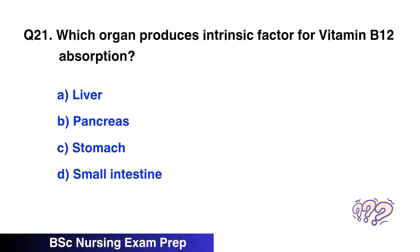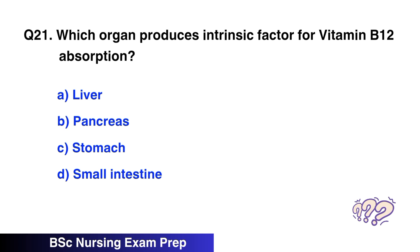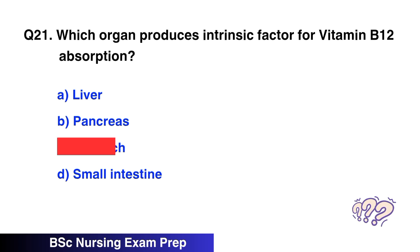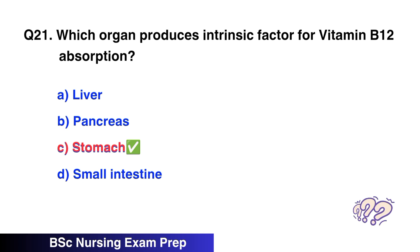Question 21. Which organ produces intrinsic factor for vitamin B12 absorption? The correct option is C, stomach.